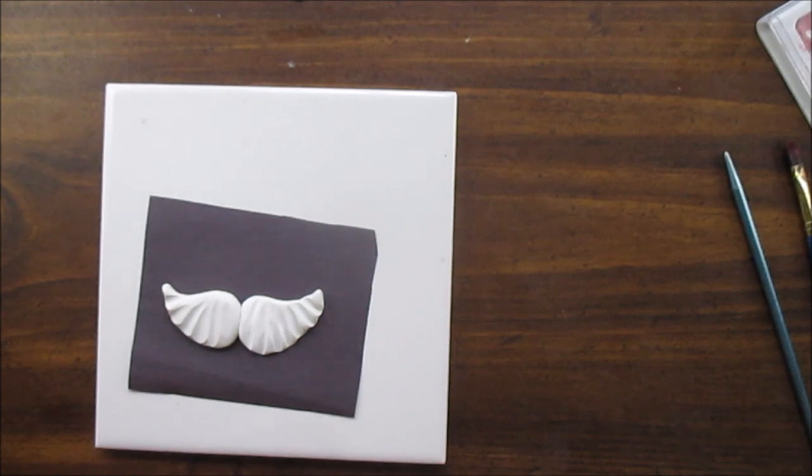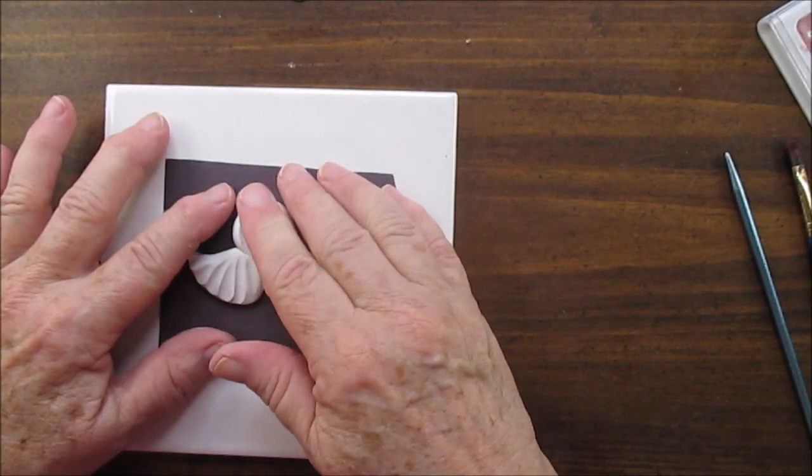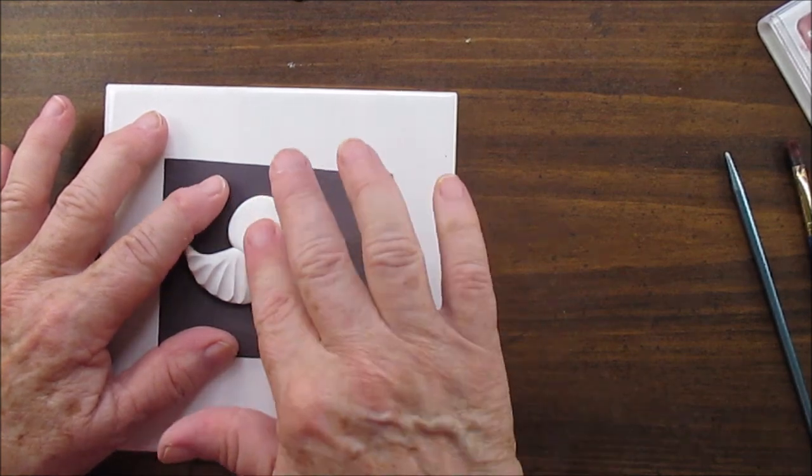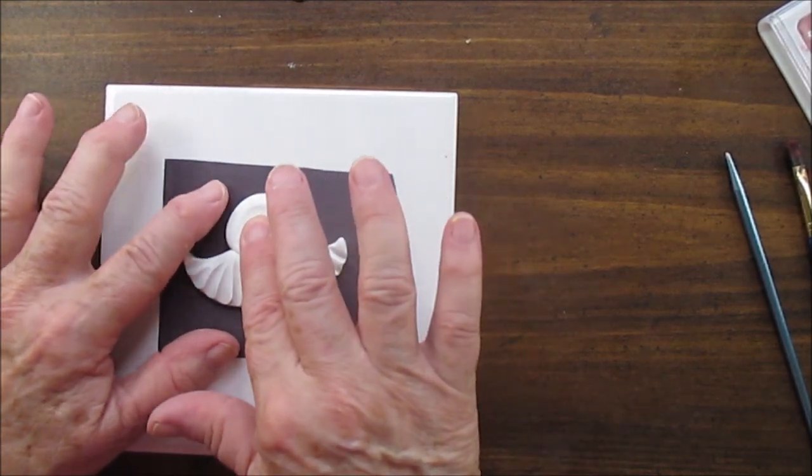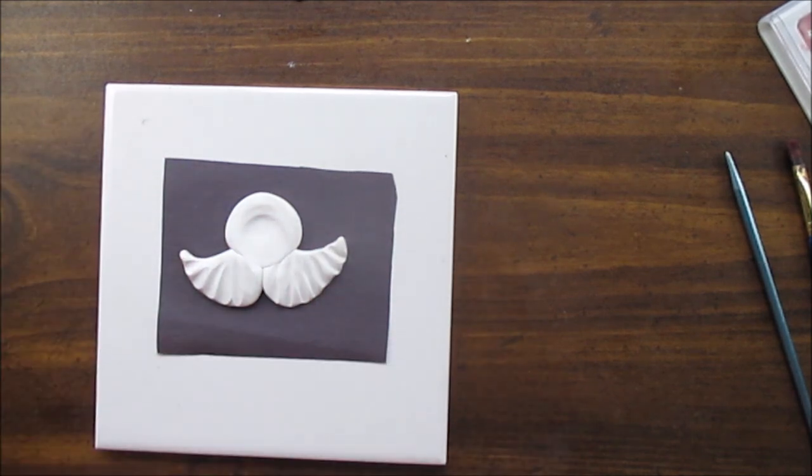This piece of white clay is the halo. You can make this gold or different color, whatever you want. You don't have to do it in pastels.